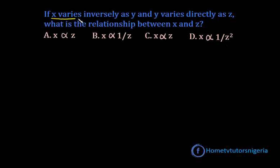X varies inversely as Y. This can be represented with a formula X inversely proportional to 1 over Y. And this means that if the variable X increases, the variable Y decreases.